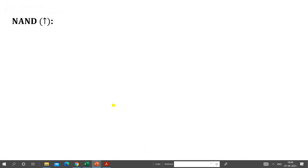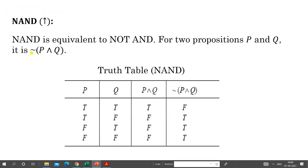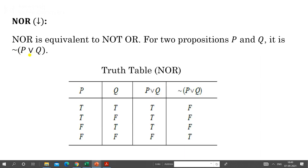Next is NAND, which is NOT of AND — that is, the negation of (P AND Q). You first find the truth values of P AND Q, then negate them to get the NAND truth table. Similarly, NOR is NOT of OR — the negation of (P OR Q). First find P OR Q, then negate it to get the NOR truth table.